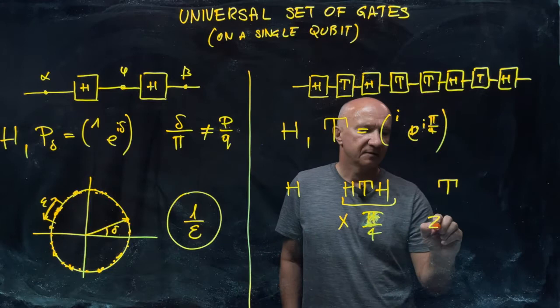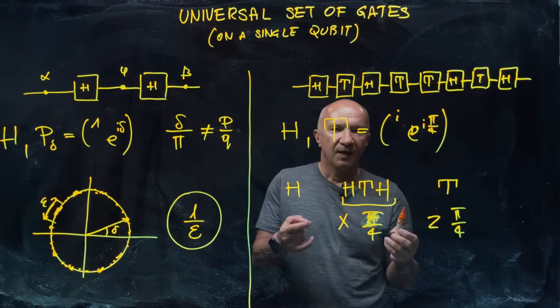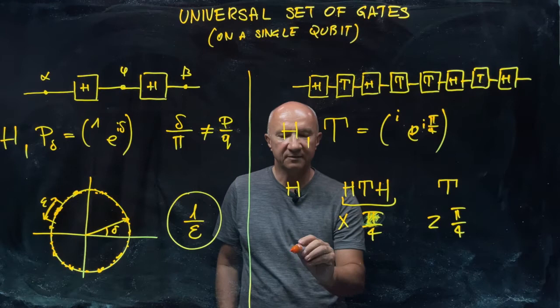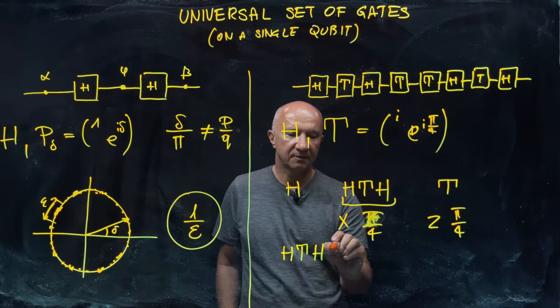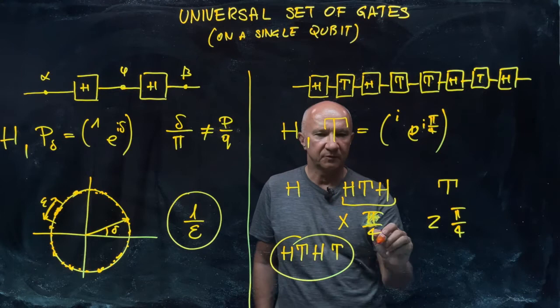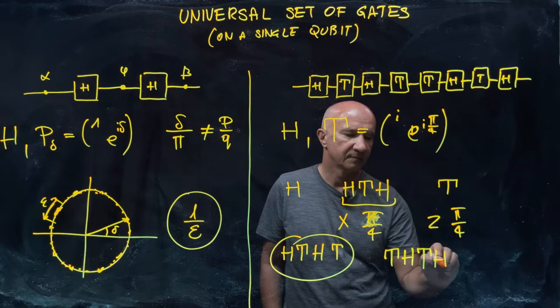And this is about the Z axis, again, by pi over four. And if you compose the two rotations, so if you construct a sequence of gates H, T, H, T, and another sequence which would be, let me just put T in front: T, H, T, H.